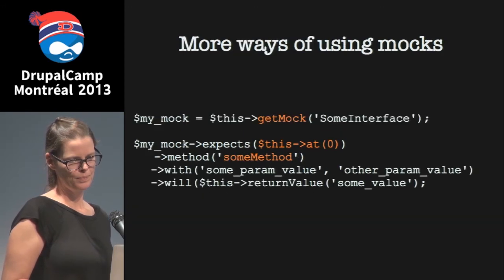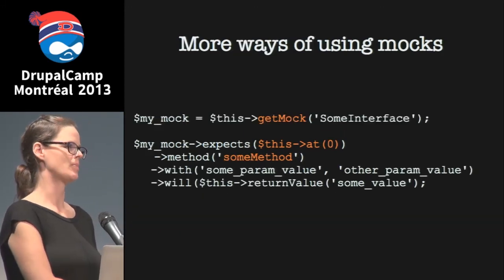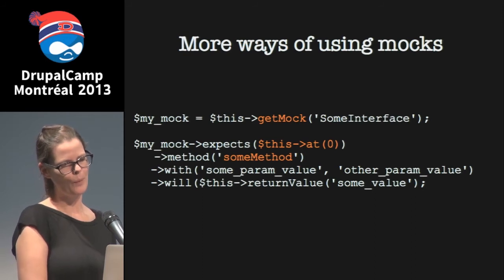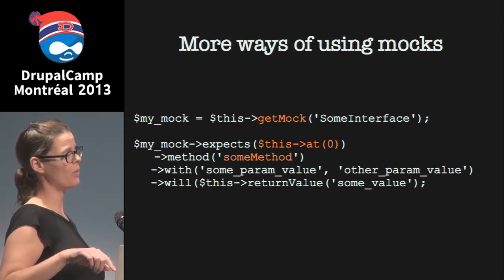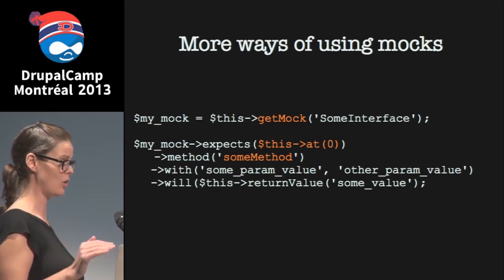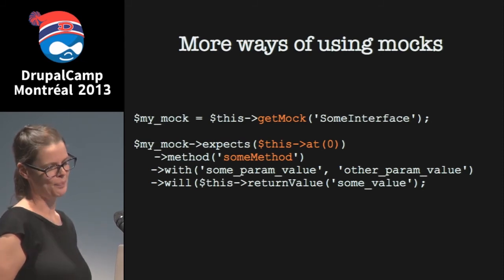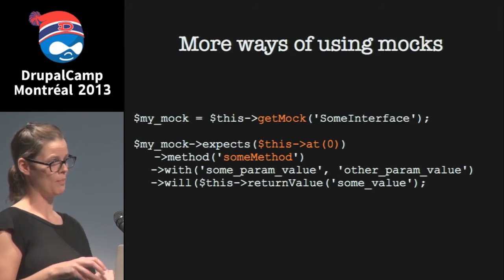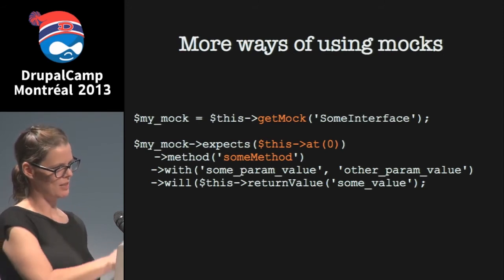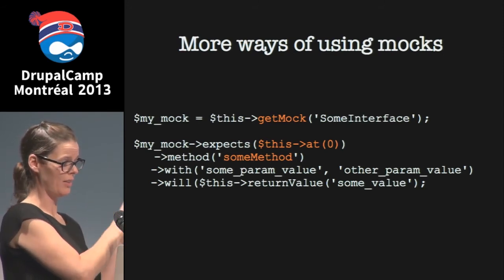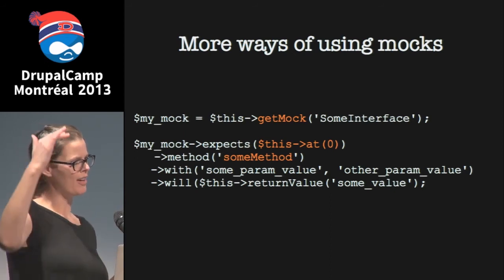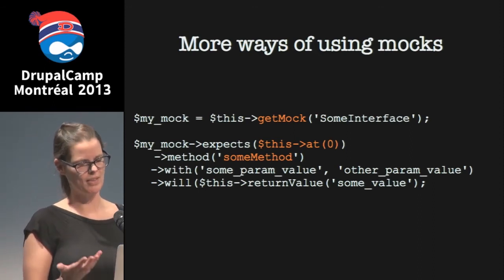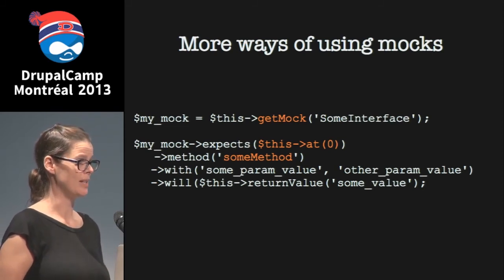You can set up more specific expectations. For example, using at(0) you're saying the very first method called on your mock will be someMethod. You can be really particular about exactly what methods you expect to get called on your mock object. When you pass the mock into the class you're actually testing and call methods on it, you can specify exactly how it's going to interact with the mock — including what parameters are passed in and what the mock should return.